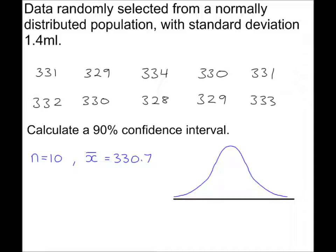Sketch the normal distribution, marking 90% in the centre, so 5% goes in each tail.